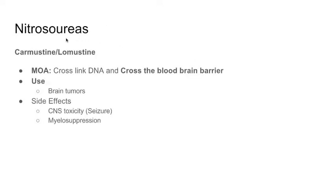The next class of alkylating agents is the nitrosoureas — carmustine and lomustine. These cross-link the DNA. The biggest high-yield point: carmustine crosses the blood-brain barrier. It's therefore used for brain tumors, because you need the drug to reach tumors in the brain. Side effects include CNS toxicity and seizures — because it crosses the BBB — and myelosuppression.